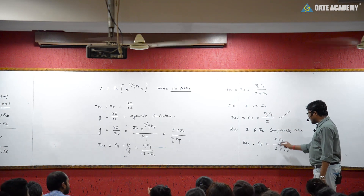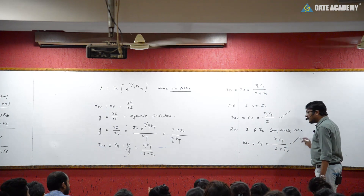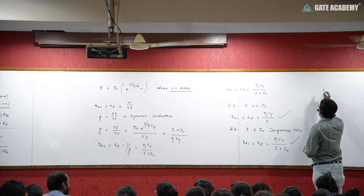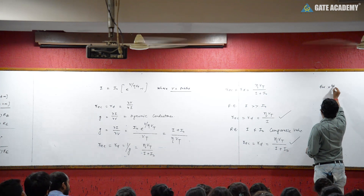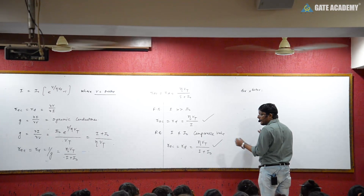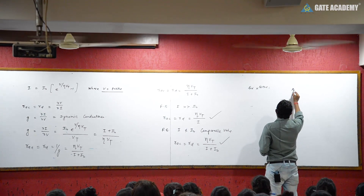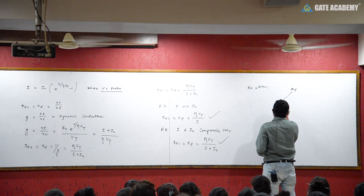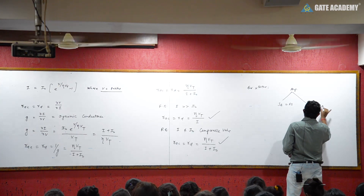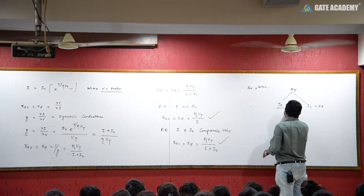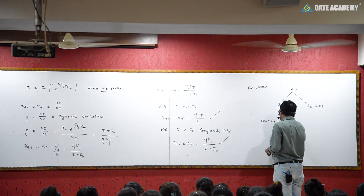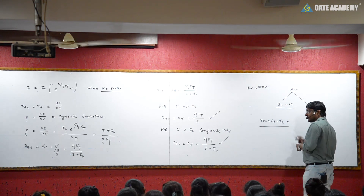When talking about forward bias we use the simplified dynamic resistance, and for reverse bias the full result eta Vt upon (I plus I₀) applies since no term is negligible. This is the complete dynamic resistance and AC resistance of the diode. When we talk about a transistor used as an amplifier, the input junction is in forward bias.